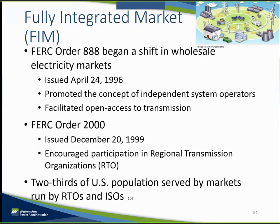As we talked about in earlier modules, the US grid was historically dominated by vertically integrated utilities. This began to change in the late 1990s with FERC order 888 and order 2000, which began to shift wholesale markets from simply bilateral markets to broader wholesale markets in order to increase competitiveness and transparency. FERC did this by encouraging — but not mandating — all transmission-owning entities to form or join a Regional Transmission Organization, or RTO, to promote the regional administration of high-voltage transmission systems. RTOs, or ISOs (Independent System Operators), are the entities that establish fully integrated markets and are responsible for operating them.